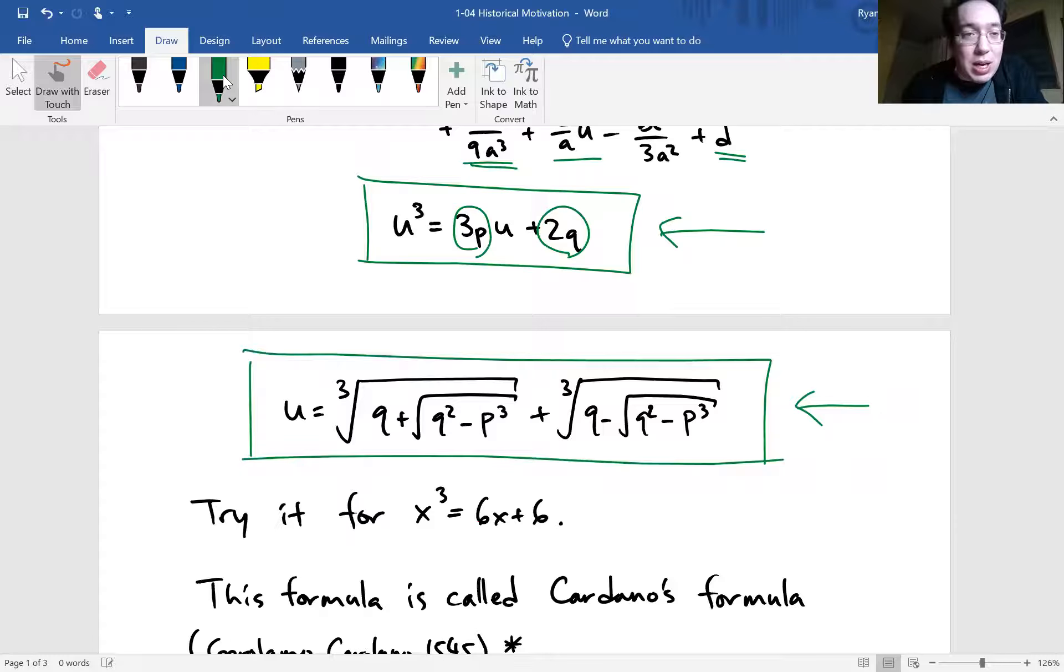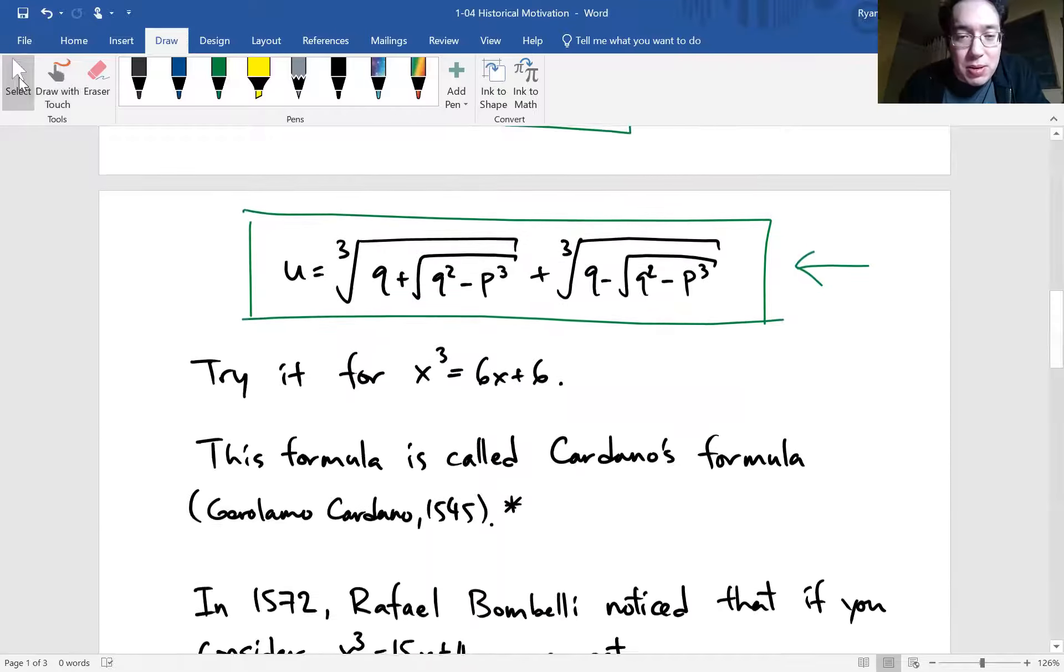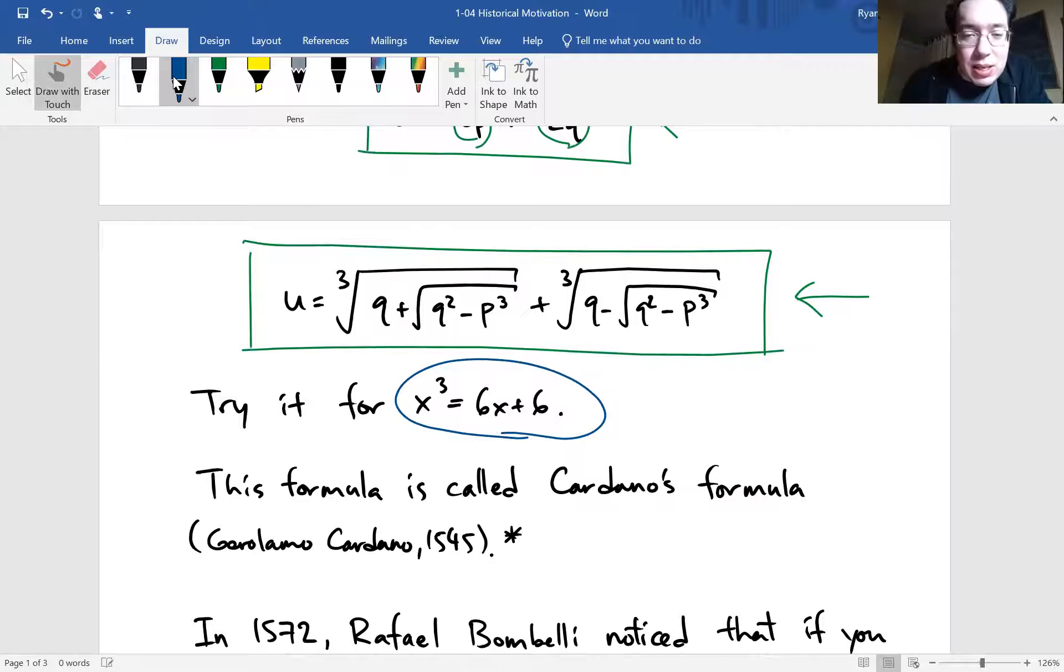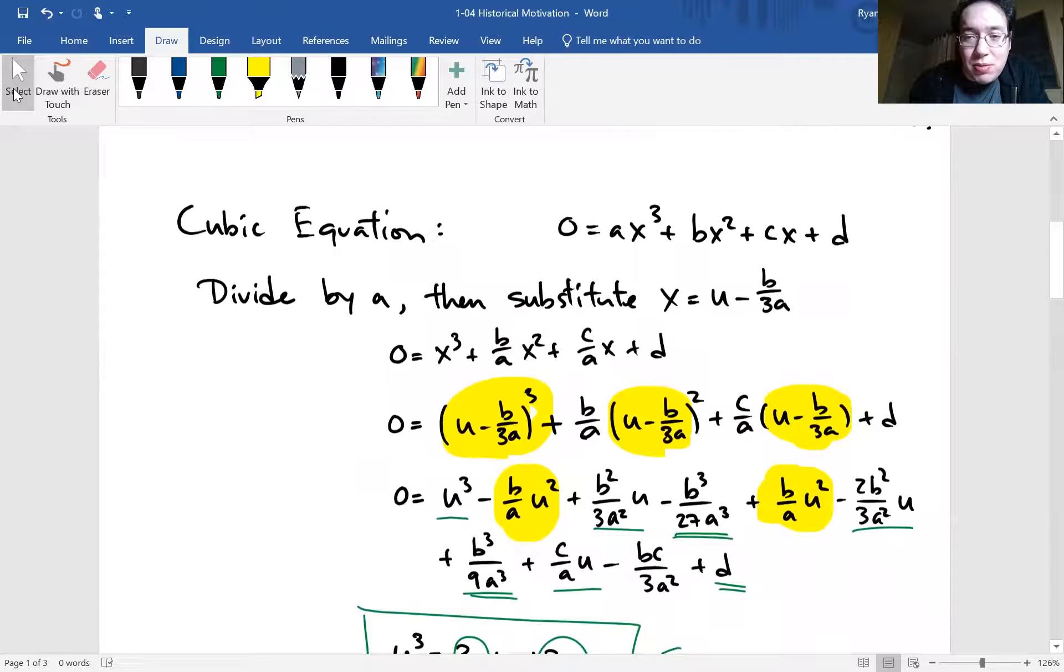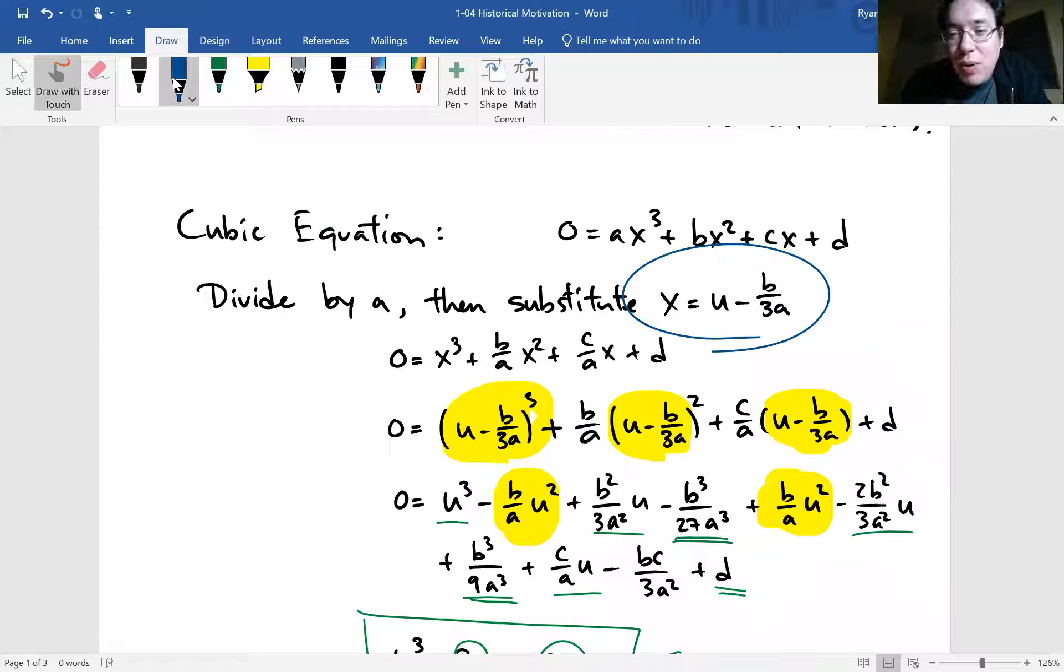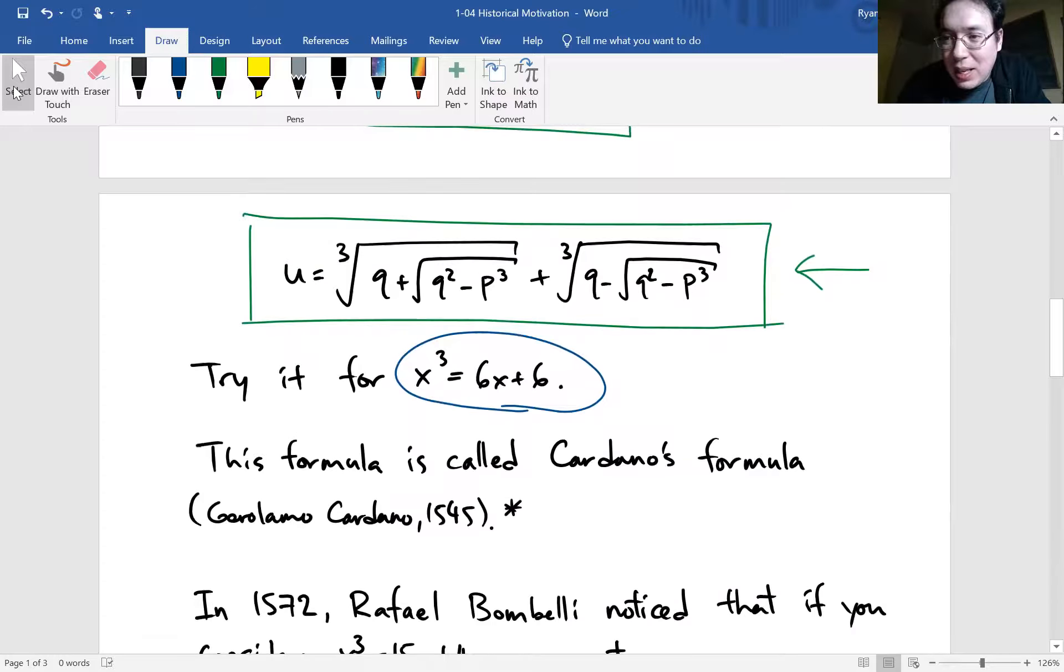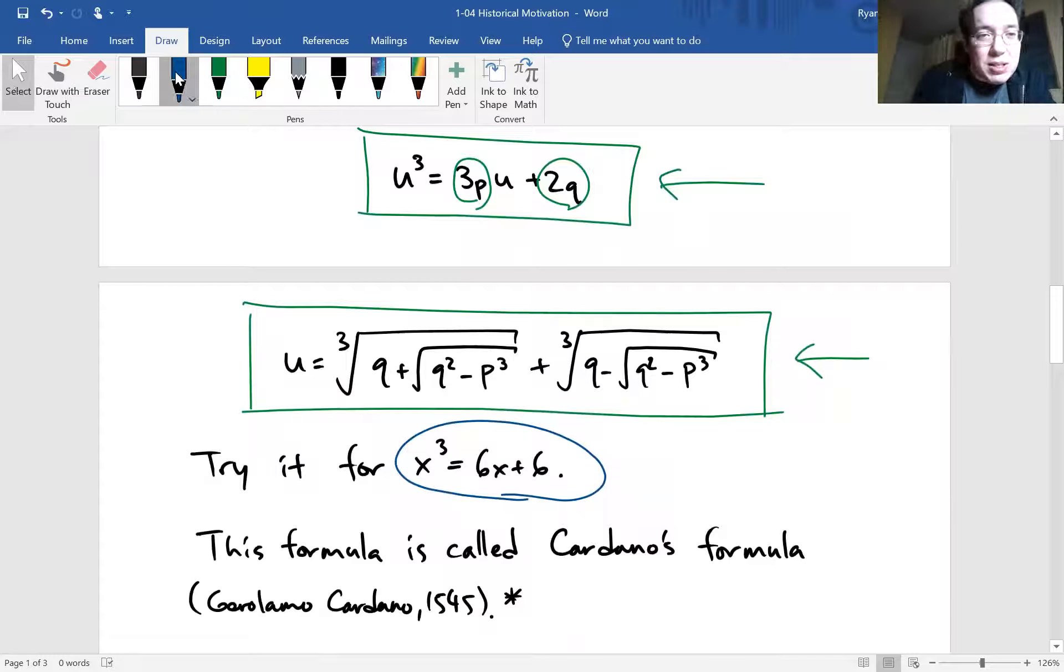So what I want you to do is pause this video and see if you can do this yourself, trying to plug it in. Right? So if I give you a cubic in this form, x³ is equal to 6x plus 6. Notice that there's no quadratic term. There's no x² term. So you do not have to make that substitution. Right? So remember, we made this substitution at the beginning to get rid of the square term. So if it doesn't exist there, you can jump right to the formula.